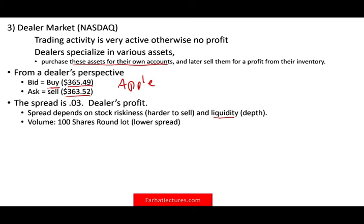The spread also depends on volume — if you buy shares in 100-share lots, the spread is usually lower. Availability matters too: if the dealer has the stock available, they'll charge a lower spread. If they need to go out and buy it, you may face a higher spread — but this process happens within milliseconds. The system automatically sources the stock from elsewhere, though you might pay a higher spread.